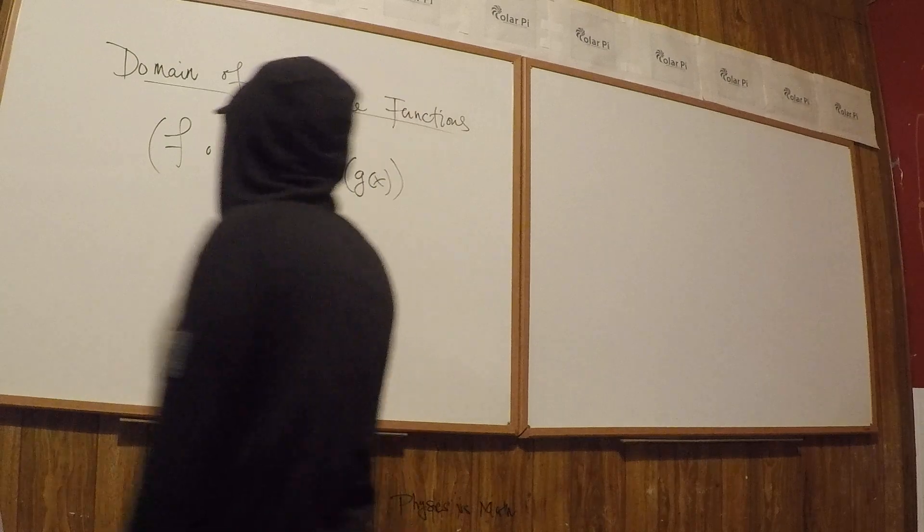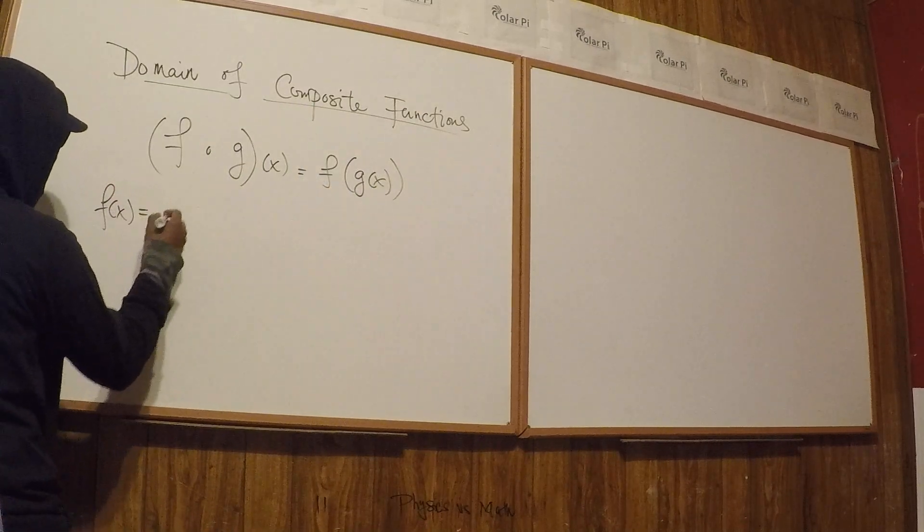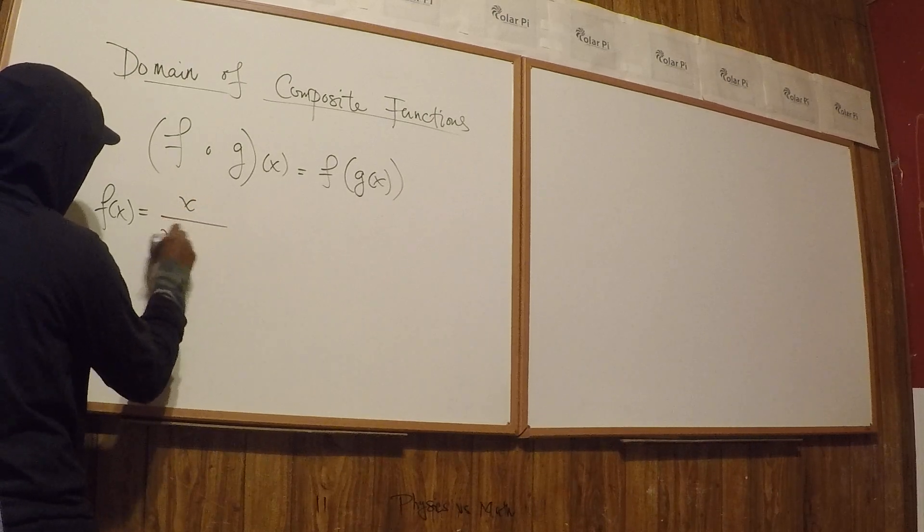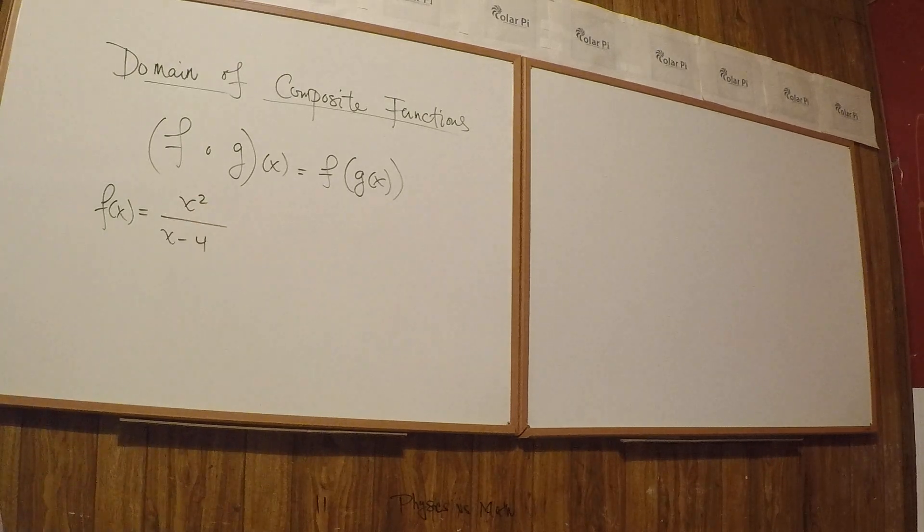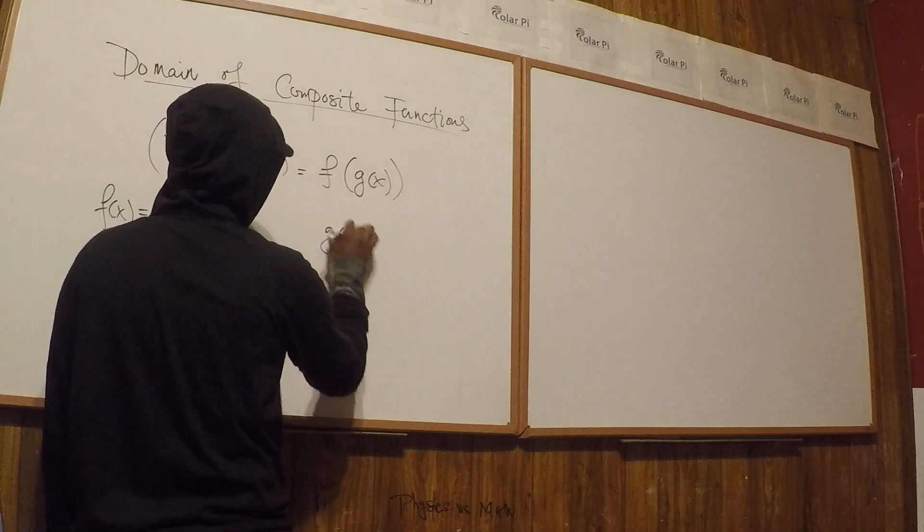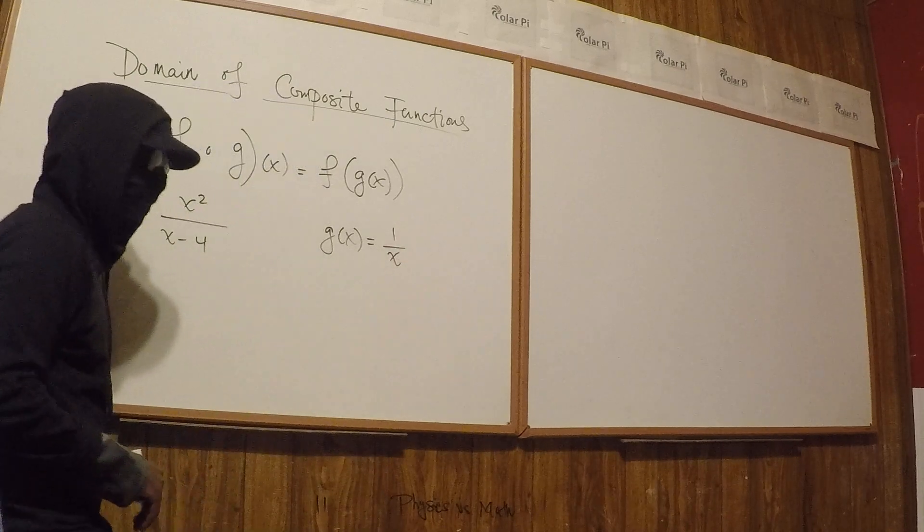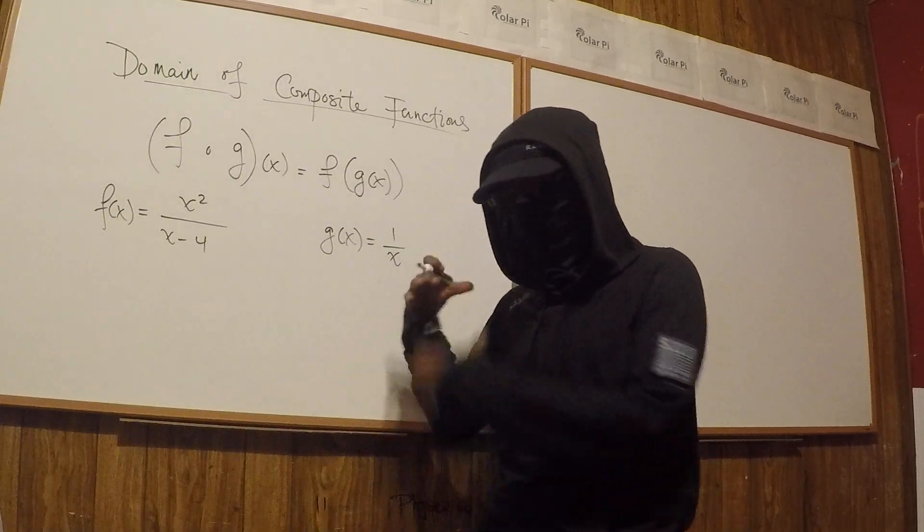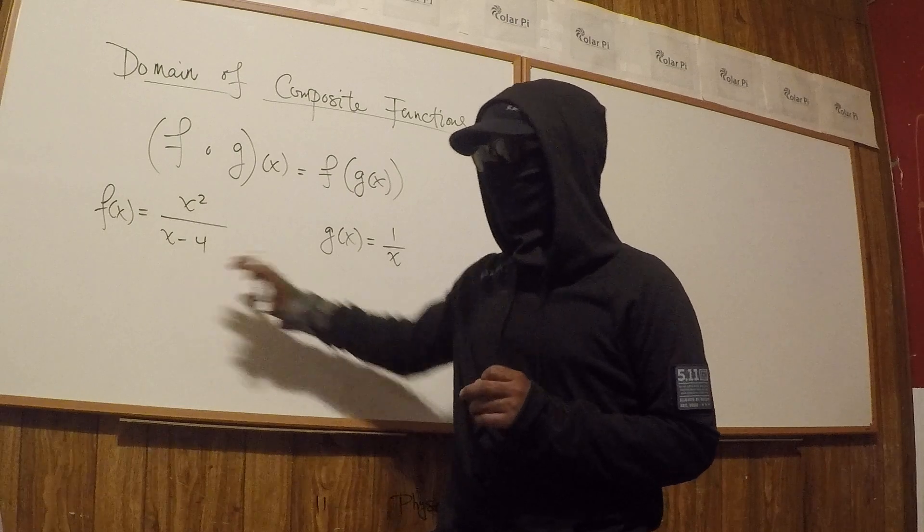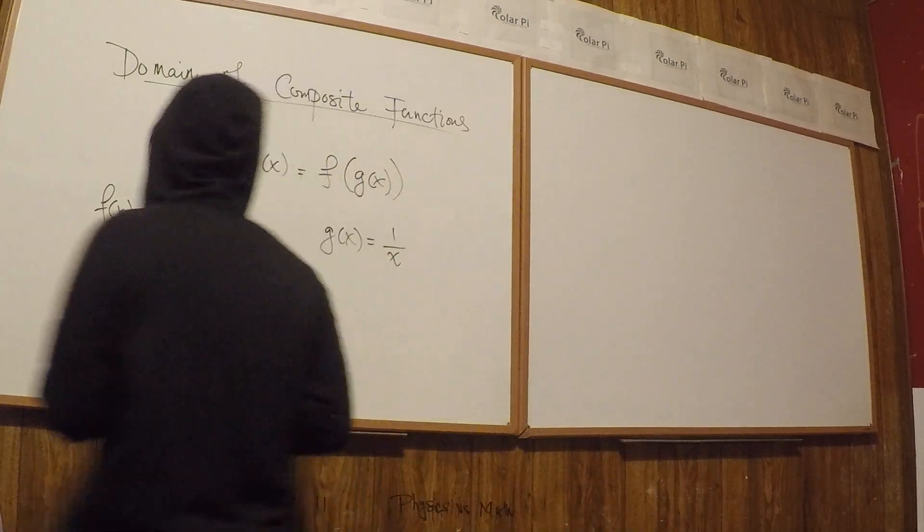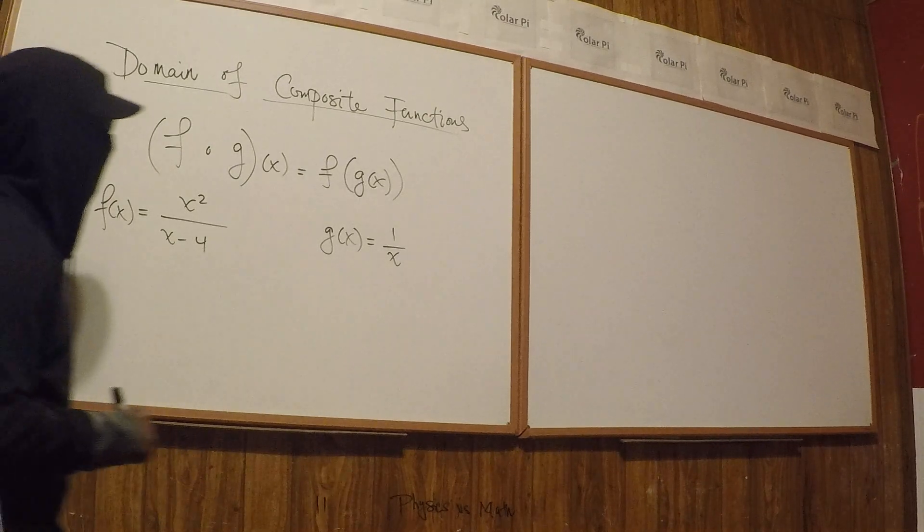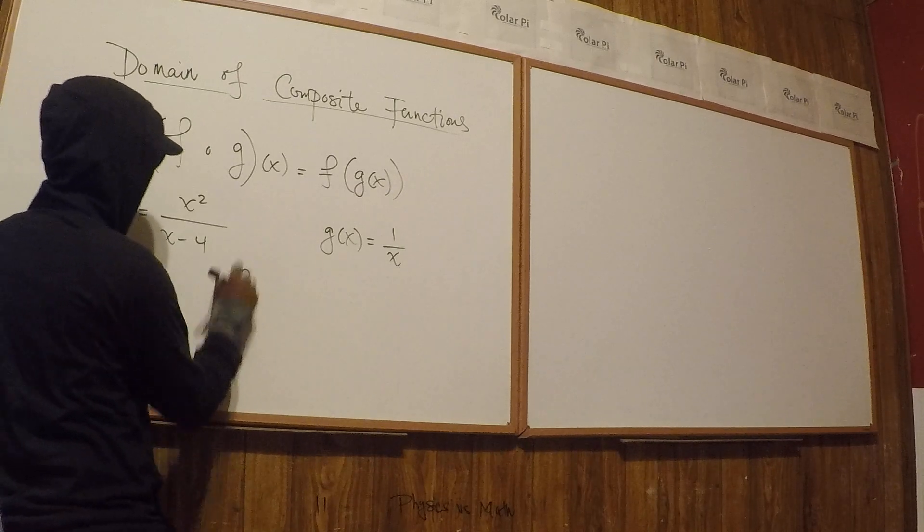To illustrate this point let's consider the following two functions. So let's consider f of x equals x over x minus 4, or it can even be x squared over x minus 4, it will do just fine to demonstrate what I'm trying to demonstrate. And g of x, let's say, is 1 over x. Yes, we can come up with more exotic functions as our examples but I want to keep it focused to the idea and therefore I'll use these perhaps less interesting functions.